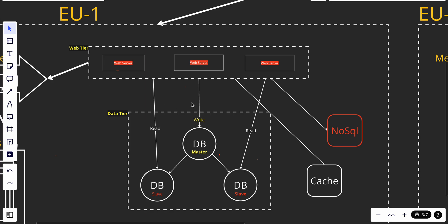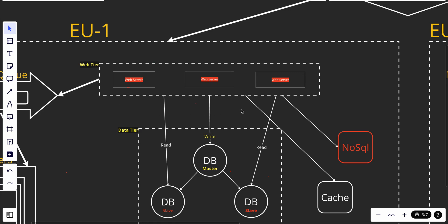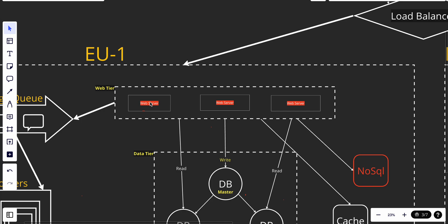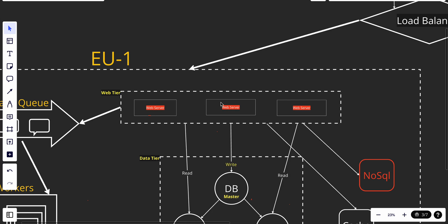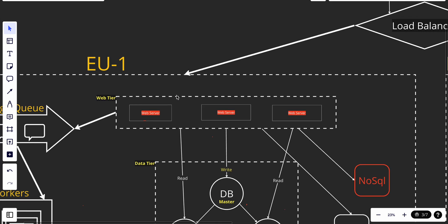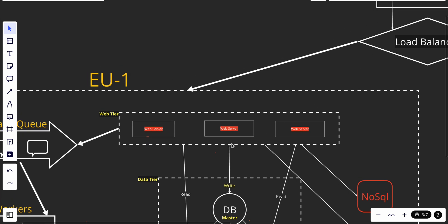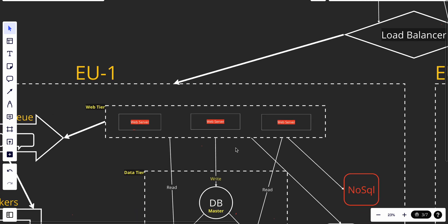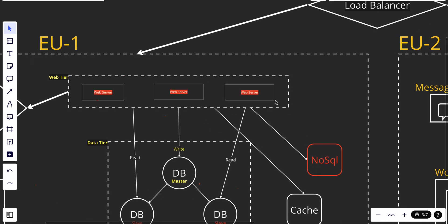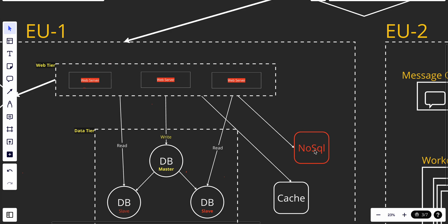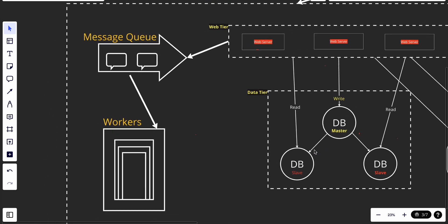In the web tier, we use a stateless architecture. We don't store session data on the web servers because if a server goes down, that client data is gone. Also, if the load balancer routes a user to a different server, the session data wouldn't be there. So we use shared storage — a NoSQL database — because it's easy to scale. This way the web tier has no state at all.